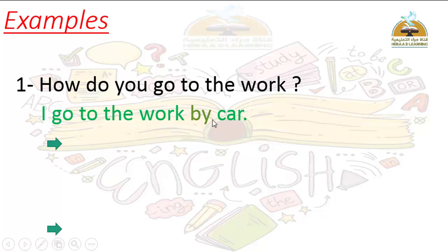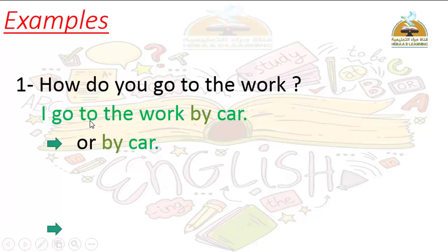When making the answer, first remove the question word and question mark. The helping verb Do does not appear in the answer. Start with the subject — You changes to I. The verb go stays as go with no additions. Then: to the work — by car, by bus, or by taxi depending on the picture. Long answer: I go to the work by car. Short answer: by car.